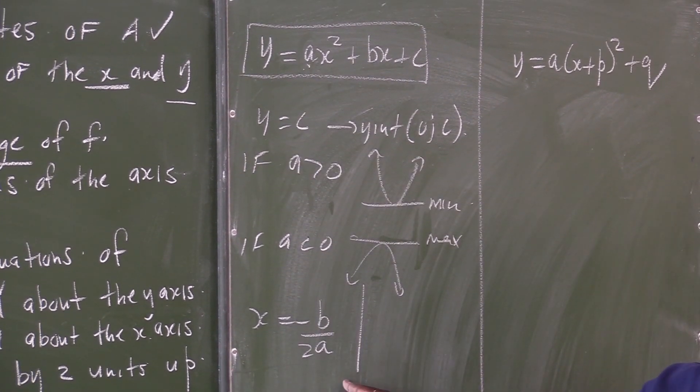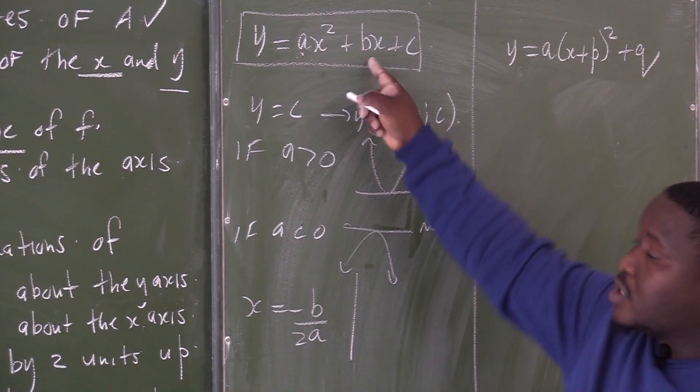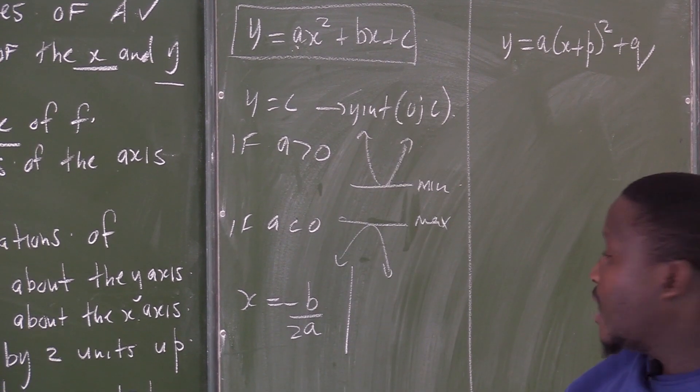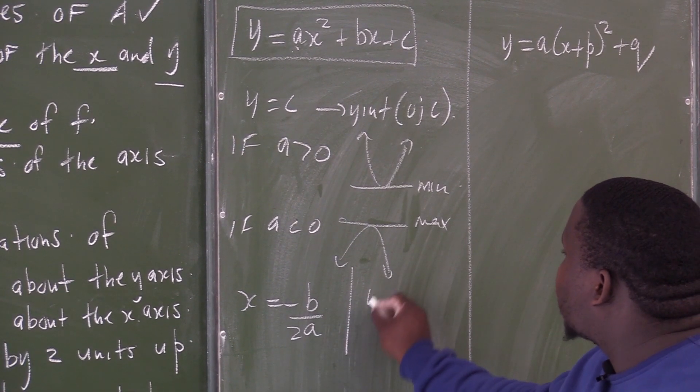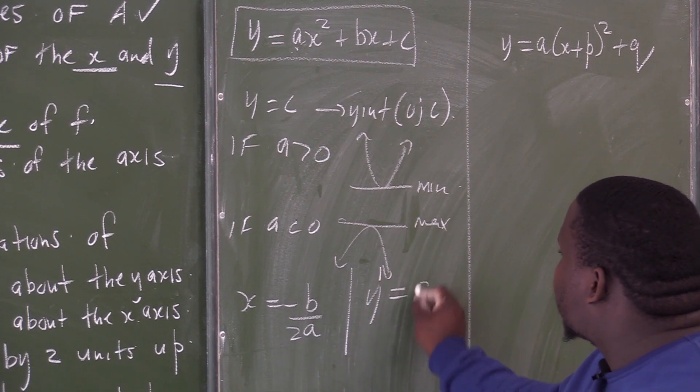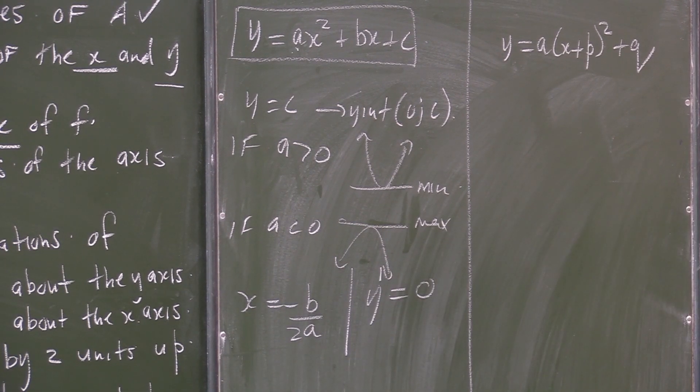Those of you who have a calculator, they will say to find the coordinates of the turning point, you work out the derivative and equate it to 0 and solve for x. That is still correct again.